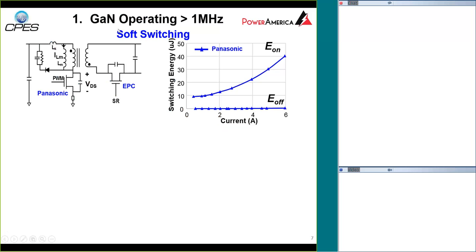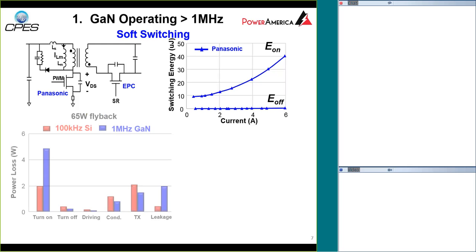If you use GAN and run the frequency ten times higher, you really can see the benefit. Simply replacing silicon with GAN shows some efficiency improvement — but I would say that would be short-selling the potential of a GAN device. On the right-hand side you can see the turn-on energy and turn-off energy. With the GAN device, the turn-off energy is very small — almost negligible. Turn-on energy is less than silicon but not negligible; as current goes up, turn-on energy increases. Comparing silicon (marked in red) with GAN (marked in blue), turn-on loss for GAN is much less, turn-off loss is very small, driver loss is very small, conduction loss is somewhat smaller, and leakage loss is much higher than silicon. So we have to deal with this.